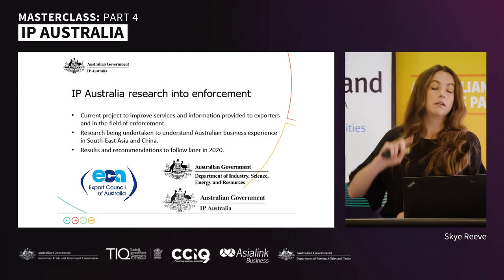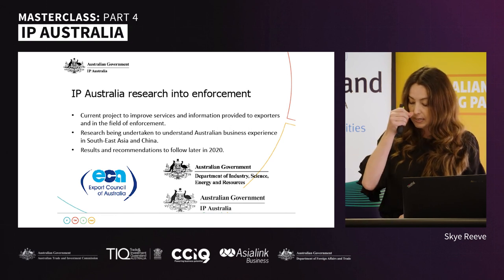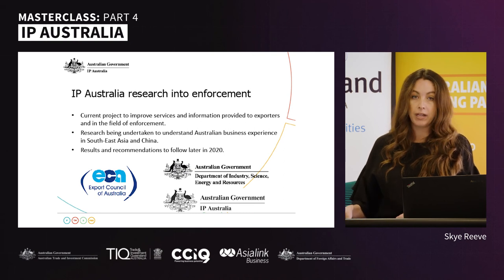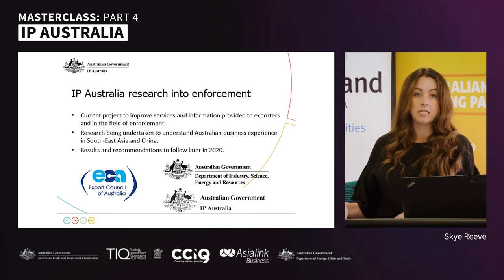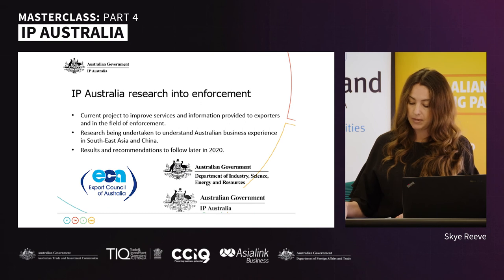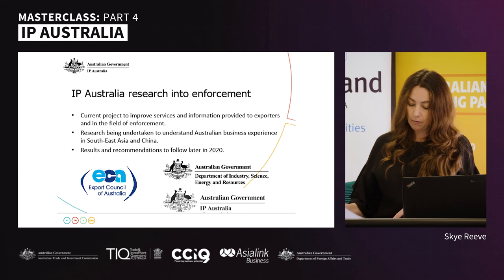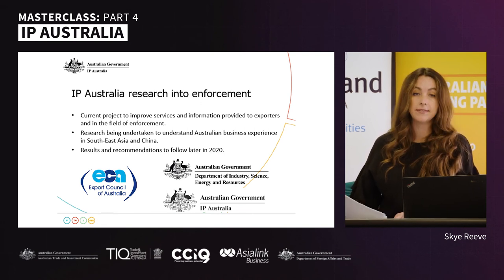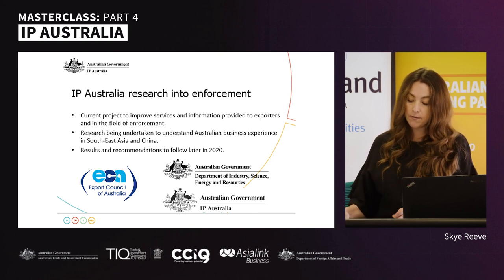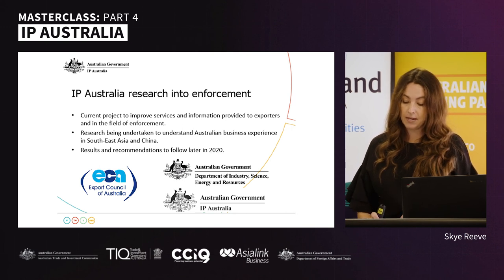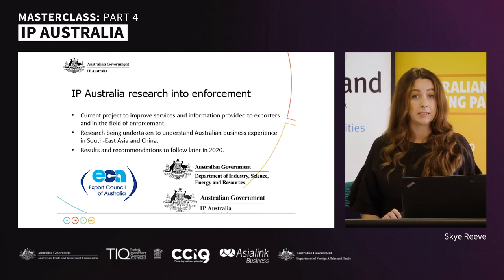IP Australia is looking more deeply into the challenges in registering and enforcing IP rights overseas. We have commenced a large body of work to scope initiatives and increase support, including through a streamlined enforcement ecosystem. Research began through a survey of Australian businesses and their experience registering or protecting their IP in China and Southeast Asia. Initial analysis indicates most respondents had an understanding of IP, most having trademark registrations. About a third have been involved in an IP-related dispute, and 44% indicated someone infringed their registered IP — including around 10% by their own business partner or distributor.